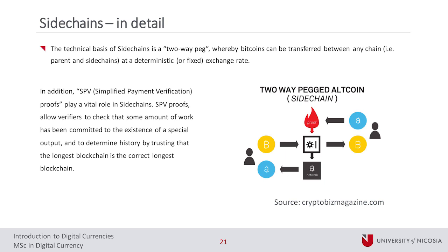On page 21, the text reads: 'The technical basis of sidechains is a two-way peg, whereby Bitcoin can be transferred between any chain, parent and sidechains, at a deterministic or fixed rate.' In addition, SPV proofs play a vital role in sidechains. SPV proofs allow verifiers to check that some amount of work has been committed to the existence of a special output, and to determine history by trusting that the longest blockchain is the correct longest blockchain.